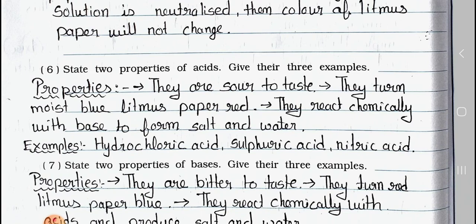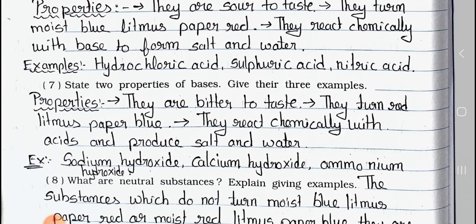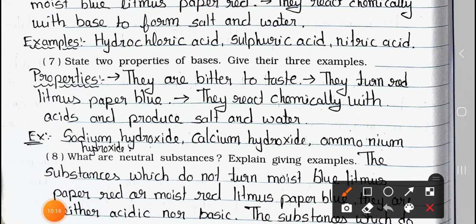Question number 6: State 2 properties of acids and give 3 examples. Properties: They are sour to taste. They turn blue litmus paper red. They react chemically with a base to form salt and water. Examples: Hydrochloric acid, sulfuric acid, and nitric acid. Question 7: State 2 properties of bases and give 3 examples. Properties: They are bitter to taste. They turn red litmus paper blue. They react chemically with acid and produce salt and water. Examples: Sodium hydroxide, calcium hydroxide, ammonium hydroxide.